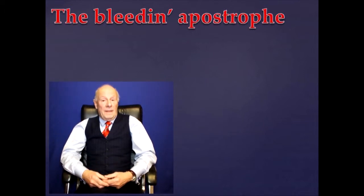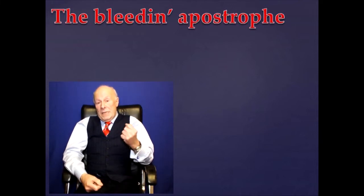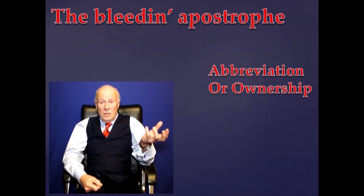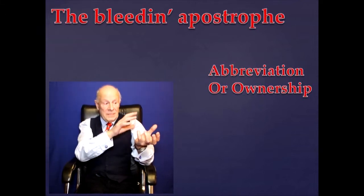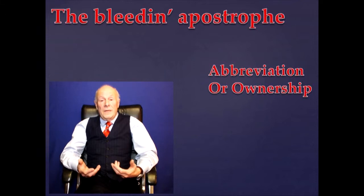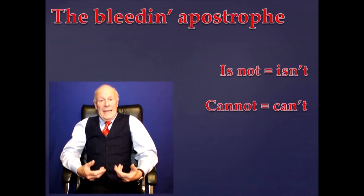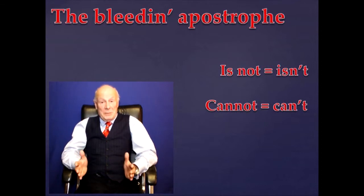So if the apostrophe is never used to denote the plural, what is it used for? It's used for just one of two things, that's all. It's either used to indicate that you have abbreviated something, or it's to show ownership. For abbreviation, you simply use the apostrophe to show that you have dropped a few characters from a word or number of words. So 'is not' becomes 'isn't', 'cannot' becomes 'can't', and so on. It is as simple as that.